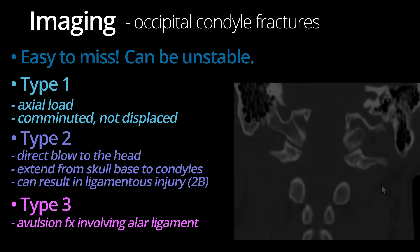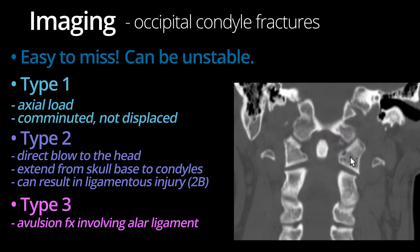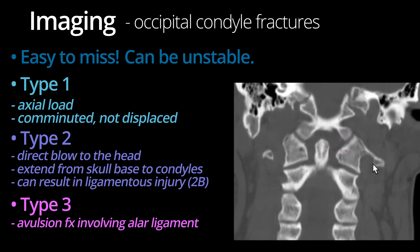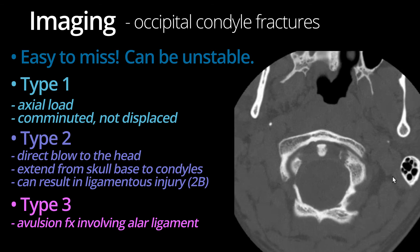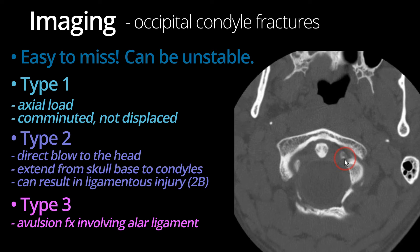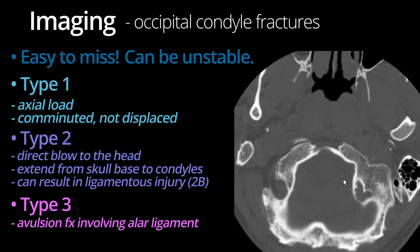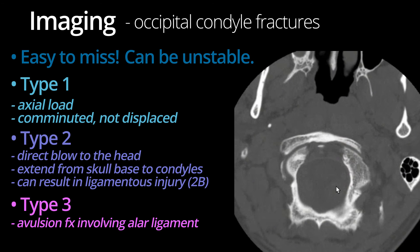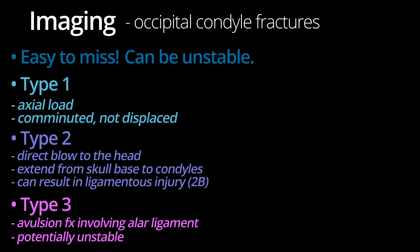Here is an example of a Type 3 avulsion fracture of the left occipital condyle. Notice a small chip of the occipital condyle is pulled off at the expected site of alar ligament insertion. This avulsed fracture fragment is also apparent on the axial series. Given the potential for associated ligamentous injury, these fractures can be unstable.